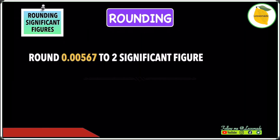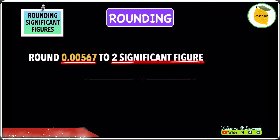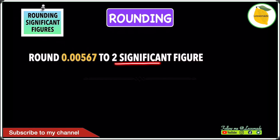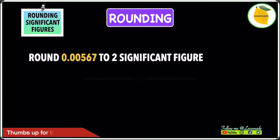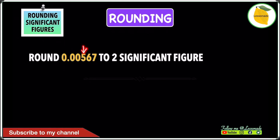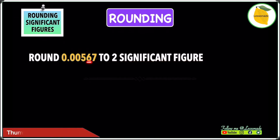Now let's have a look at this example: round 0.00567 to the second significant figure. In this case, we're rounding to the second significant figure. Remember, the first significant figure always starts with the first non-zero digit. The first non-zero digit in 0.00567 is 5, so 5 is the first significant figure. But we're rounding to the second significant figure, which is 6.